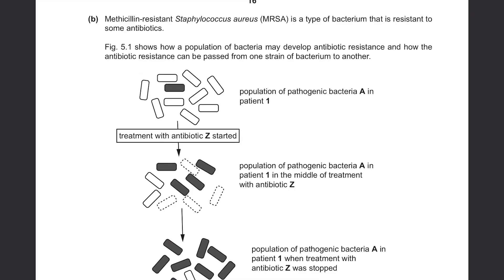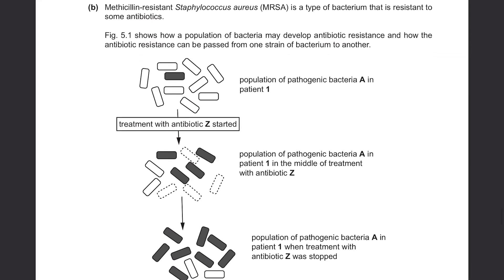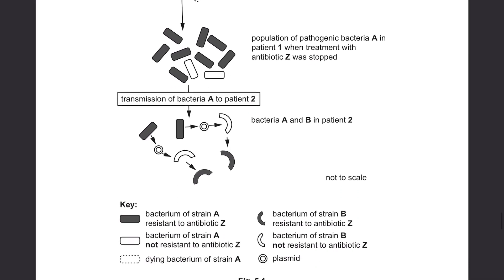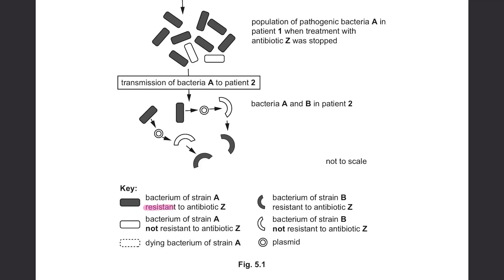Part B. Methicillin-resistant Staphylococcus aureus, MRSA, is a type of bacterium that is resistant to some antibiotics. Figure 5.1 shows how a population of bacteria may develop antibiotic resistance and how the antibiotic resistance can be passed from one strain of bacterium to another. We have a diagram here showing the processes. Looking at the key: the shaded ones are resistant to antibiotic Z, the unshaded ones are not resistant, the dotted lines show dying bacteria, and the circle is a plasmid.